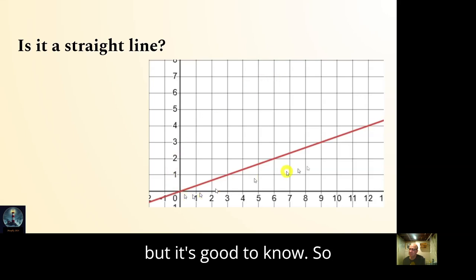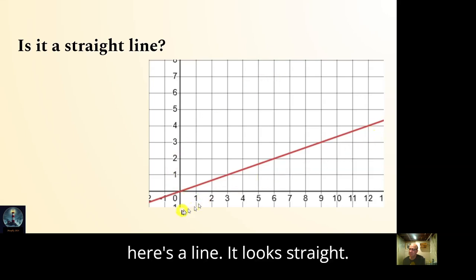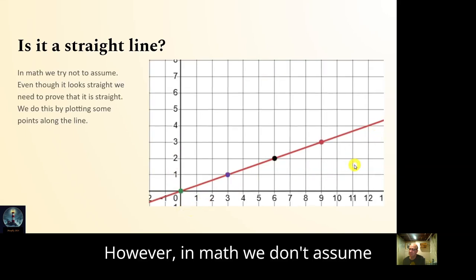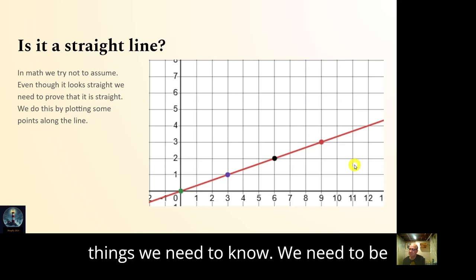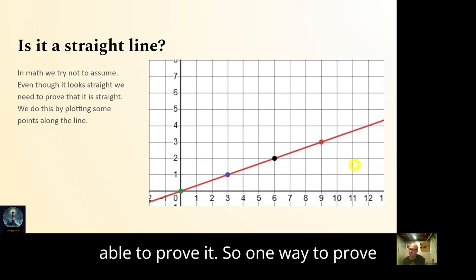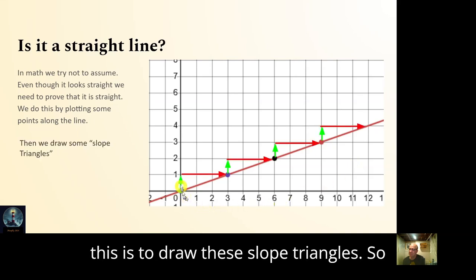Here's a line — it looks straight. However, in math we don't assume things; we need to be able to prove it. One way to prove this is to draw slope triangles.